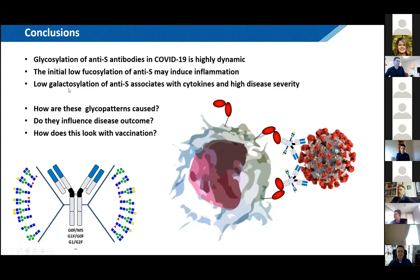We don't know how these patterns are caused. It seems to be enveloped viruses causing this, but we don't know which signals of the envelope are co-stimulating this low fucosylation pattern. Our question is: do these patterns influence or predict disease outcome? We've just started looking into this now because we have the statistical power from more than 100 patients analyzed to address these questions.